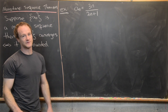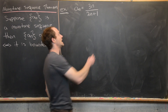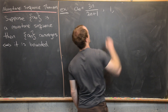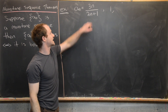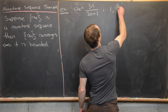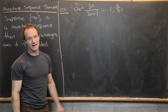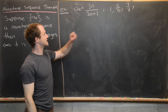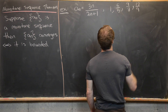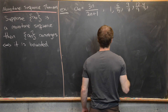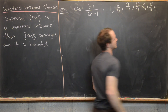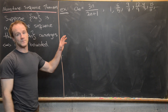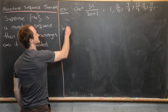Let's write out a couple of terms to get some idea of what it is bounded by, and then we'll prove that it's bounded. The first term is 3 over 2 plus 1, which equals 1. The second term is 6 over 5. The next term is 9 over 7. Then 12 over 9, which is 4 over 3. And after that, 15 over 11, and so on. It looks like this sequence is increasing — so that's what we'll show first: that this sequence is monotonically increasing.